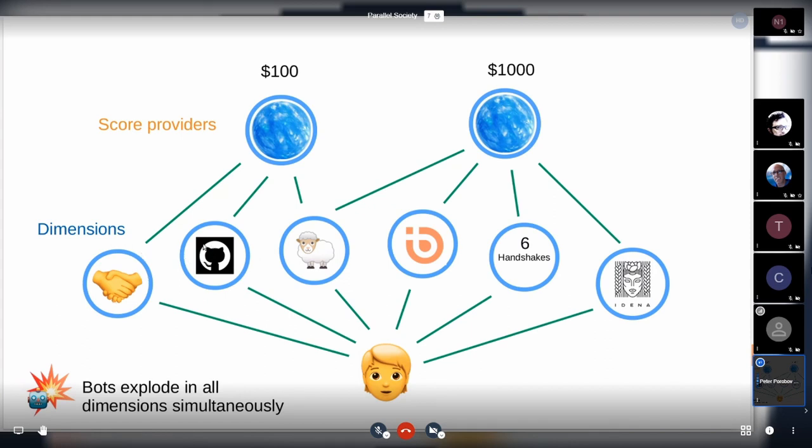We call different hierarchies with different anti-sybil tests 'dimensions.' Imagine one user is participating in multiple dimensions. That means if this user explodes, his or her account will no longer be available in those dimensions. That means this account is pretty valuable, and some score provider may assign a pretty high score to users that are participating in multiple dimensions - maybe a hundred dollars or even thousand dollars.